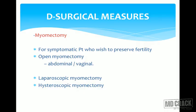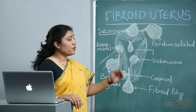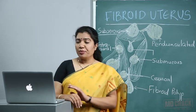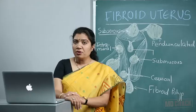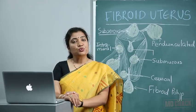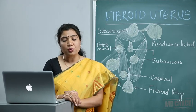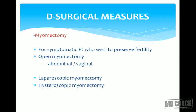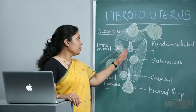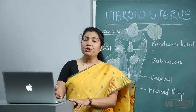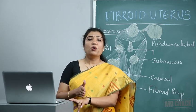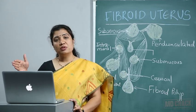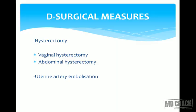Myomectomy is meant for the symptomatic patient who wishes to preserve fertility. Methods include open myomectomy with abdominal incision, vaginal myomectomy for suitable cases, laparoscopic myomectomy where the myoma is removed through a laparoscope — laparoscopic skills are now so good that even big-size myomas can be removed — and hysteroscopic myomectomy for submucosal fibroids.